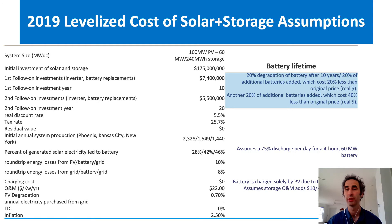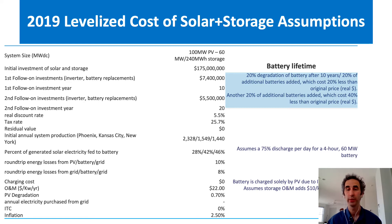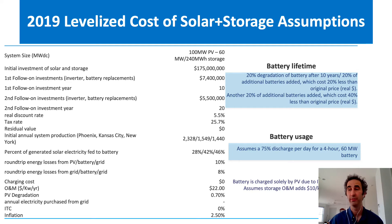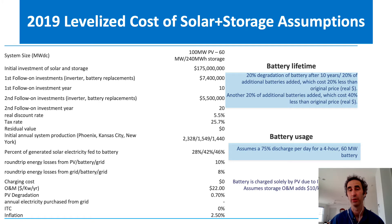We assume that the cost of such replacement is 20% less than the original price in real dollars. In year 20, we assume that another 20% of the battery capacity is degraded, and that cost is 40% less than the original price in real dollars. Integral to PV system design and cost is how the battery is intended to be used. We assume a 75% discharge rate of battery capacity per day for a four-hour, 60 megawatt battery.